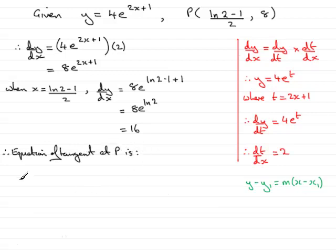we have y minus y1 which is 8, equals the gradient which is 16 multiplied by x minus x1, that's natural log of 2 minus 1 over 2.